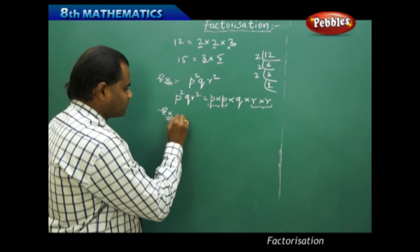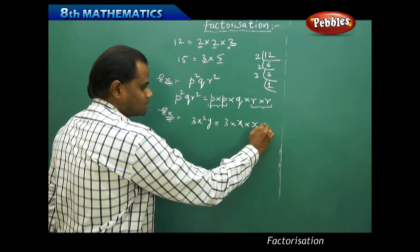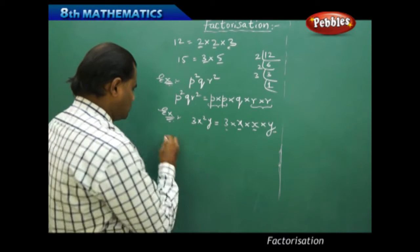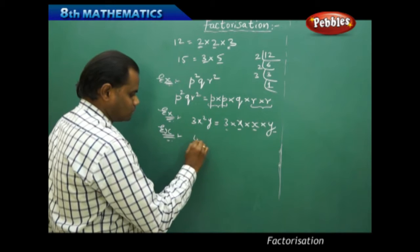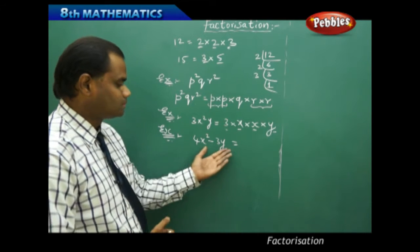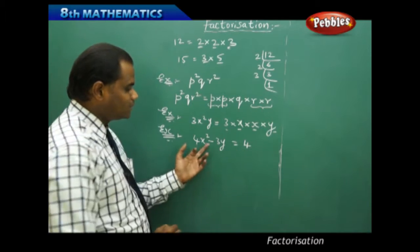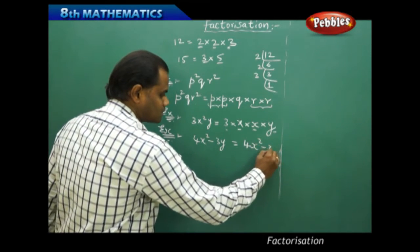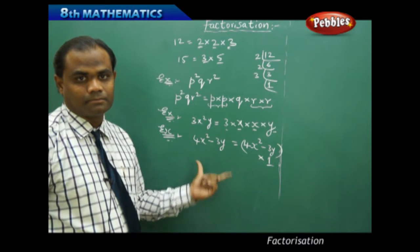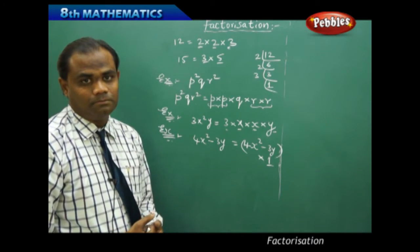Similarly, take 3x²y. This would be written as 3 × x × x × y, and these are the factors of the algebraic expression 3x²y. Now if you have an expression where you cannot find anything common, you cannot express it as a product of factors in that way. In that case, the algebraic expression is written as itself multiplied by 1, so 1 is the only factor for such expressions.